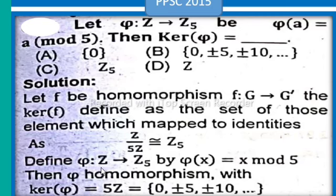Define phi as a function from Z to Z5 by phi of x equals x mod 5. Then phi is a homomorphism.